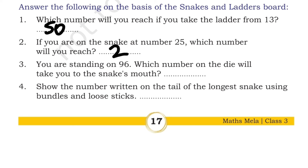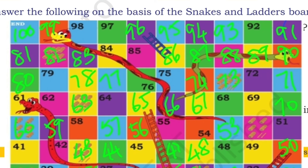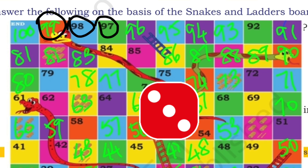Third question: you are standing on 96. Which number on the die will take you to the snake's mouth? We are standing on 96. After 96 we have 97, 98, and 99 — that is three numbers. So if the dice rolls 3, we will reach the snake's mouth at 99.